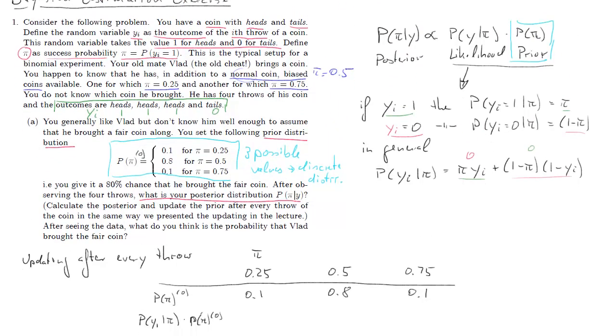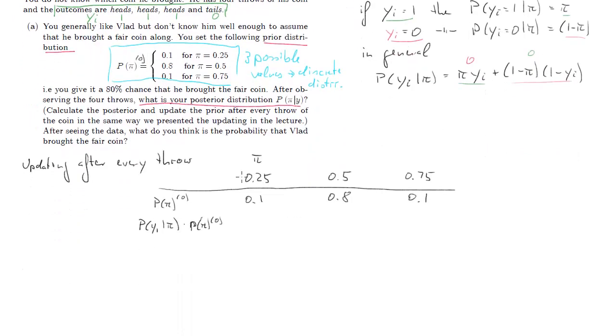So what we now need is the likelihood of the data given the pi times the prior. That's basically just this relationship up here. So the first observation is a 1. That means, what's the probability of a 1 given pi equals 0.25? Well, that's just 0.25. And then we need to multiply with the prior for 0.25, and that's 0.1. Then, success probability if pi was 0.5 would be 0.5, times the relevant prior probability, 0.8, and then success probability 0.75 times the prior 0.1 again. So when we calculate these values, we just get these 0.025, 0.4, and 0.075.